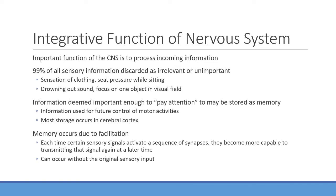It's really important that we can process all incoming information. If every single signal arrived at the same time with no way to filter it, we'd be overloaded. About 99% of all sensory information actually gets discarded as irrelevant. For example, you don't consciously feel your shirt on your body — that input gets dampened. The brain also drowns out background sound and filters visual focus to what's important.